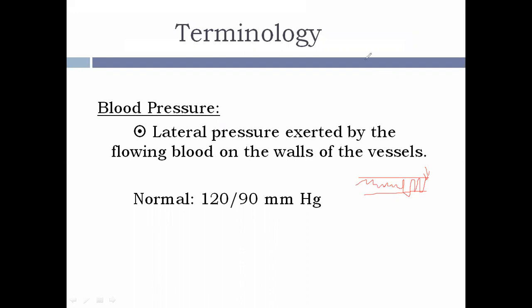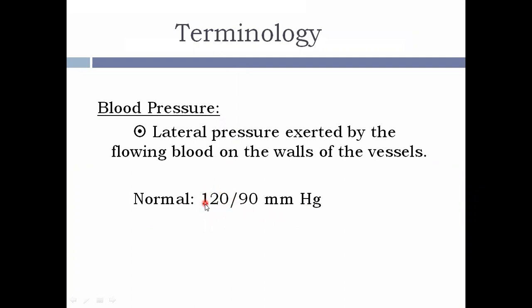But what does blood pressure specifically mean? It is the arterial pressure. So when we term blood pressure, it ultimately means the arterial pressure. The normal value of blood pressure — it doesn't have a single normal value, we always have a normal range — but the average is around 120/80 mmHg. Here, 120 corresponds to the systolic blood pressure and 80 corresponds to the diastolic blood pressure.